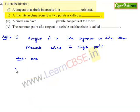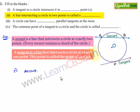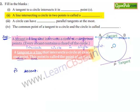Moving on to the second blank: the line intersecting a circle in two points is called a secant. From the definition of the secant, it is clear that if a line intersects the circle in two points, then it is called a secant. Let us represent this in diagrammatic form.